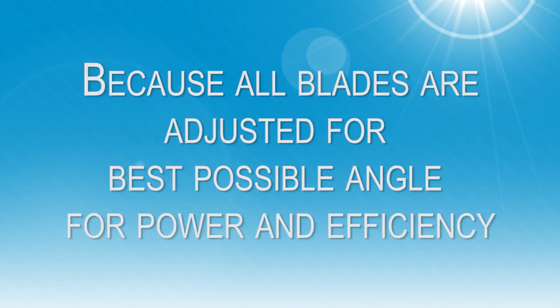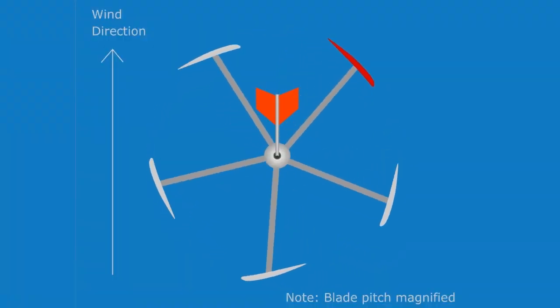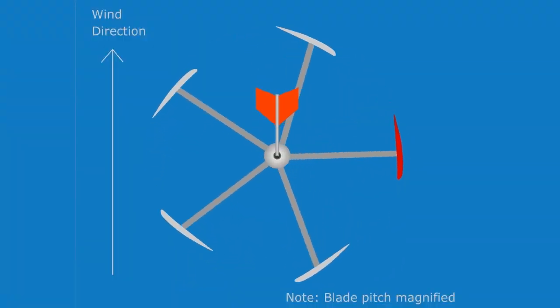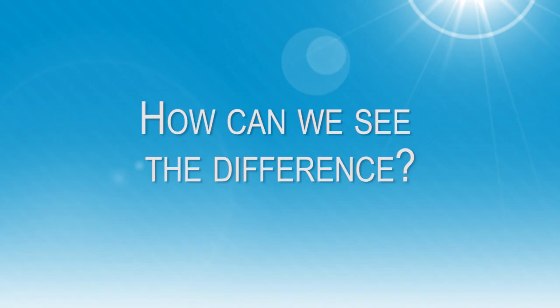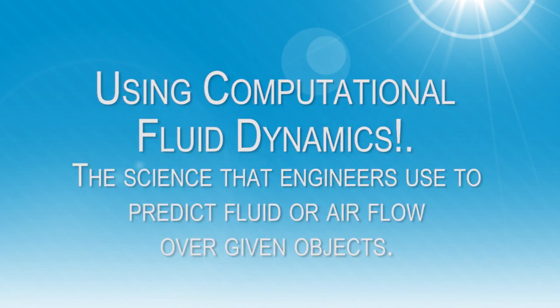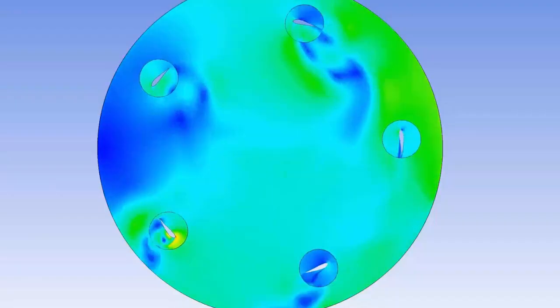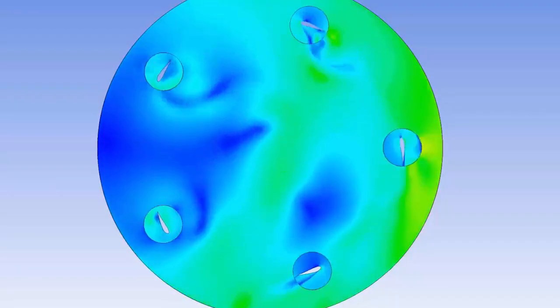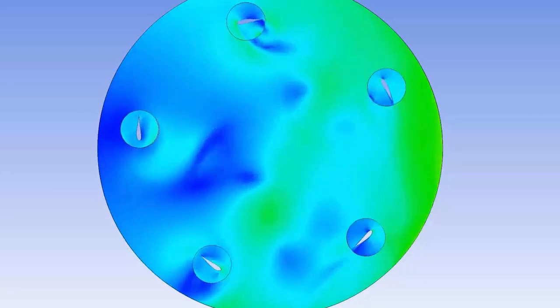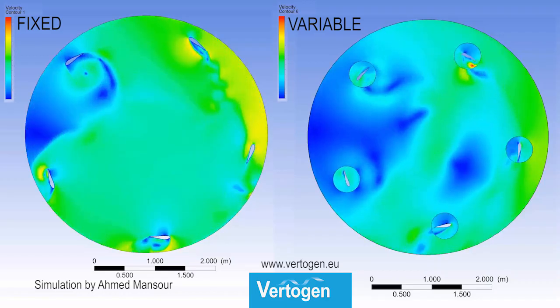Variable pitch improves starting in a light breeze or low wind speed because all blades are adjusted for the best possible angle for power and efficiency. We can see this difference using computational fluid dynamics — the science that engineers use to predict fluid or airflow over given objects.